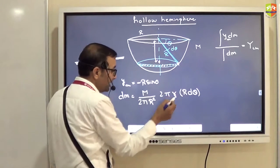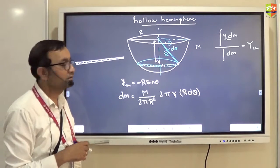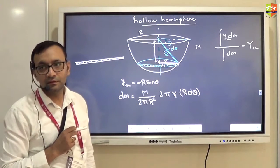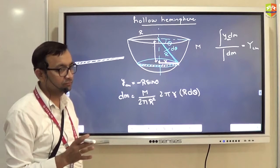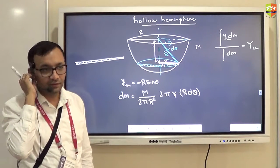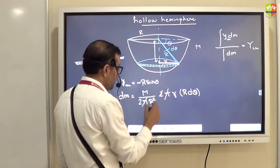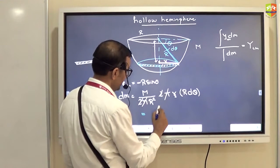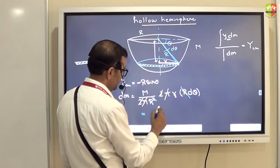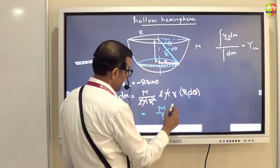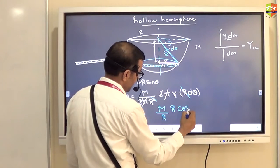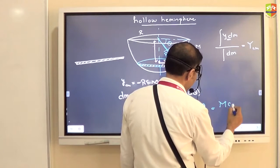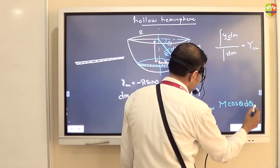What is the value of small r? Can you write small r in terms of theta? Small r is this distance, which is R cosθ. So R and R cancel. You will have m divided by R. Small r is capital R cosθ, times dθ. Even this cancels, so you get dm = m cosθ dθ. This is your dm.